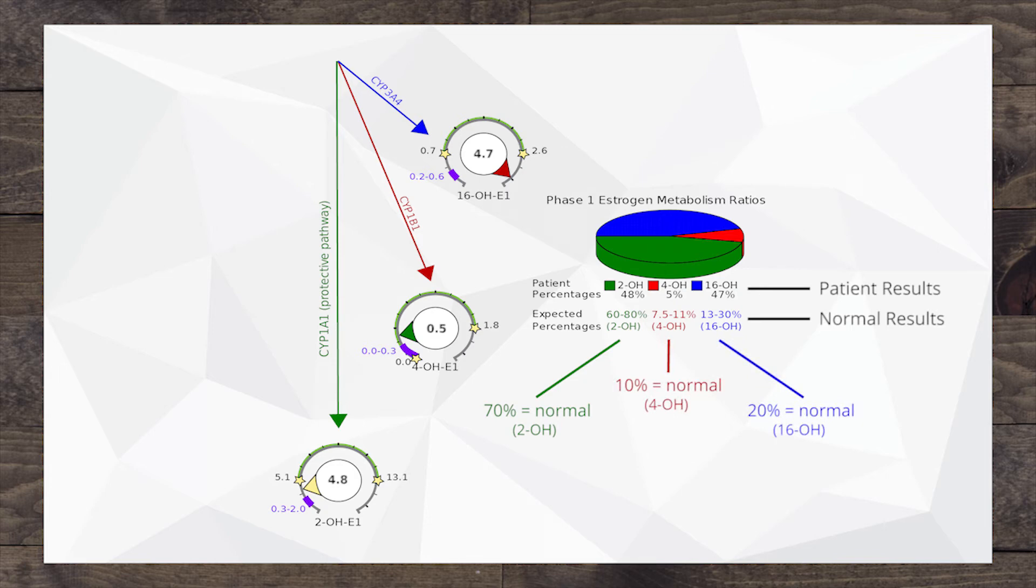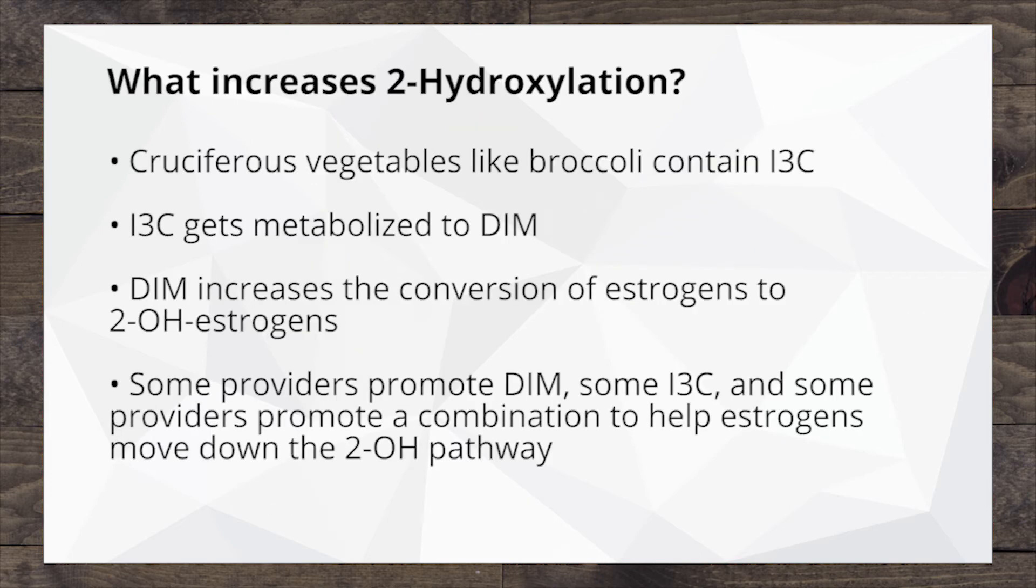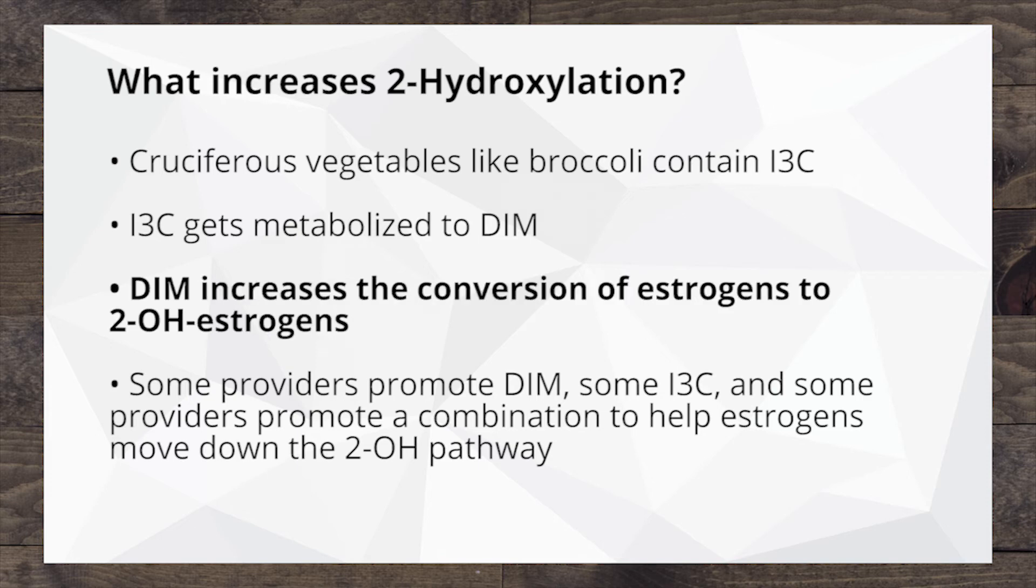The 16-hydroxy is a more potent estrogen, so if that one's predominating, we may see things like estrogen dominance, but we also want to put that in the context of the overall results. We're looking at the distribution. If your distribution is significantly lower than 70%, then you can do things to address that. Oftentimes providers will use things like DIM, I3C, DIM stands for diindolylmethane, I3C is indole-3-carbinol. That's something that's in cruciferous vegetables that's been shown to increase 2-hydroxylation, and it can improve those ratios if they're way off and the 2-hydroxy is much less than 70%.